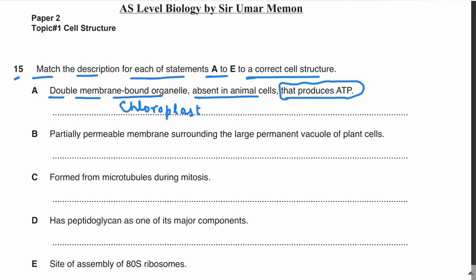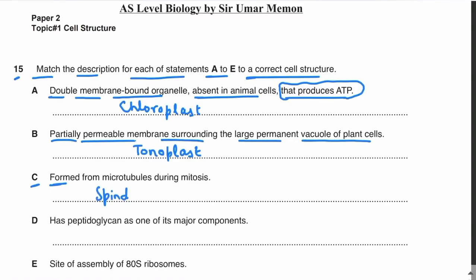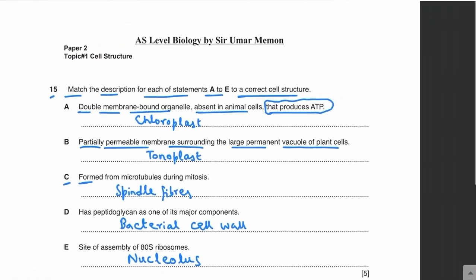Part B: partially permeable membrane surrounding the large permanent vacuole of the plant cell. This is known as the tonoplast. Part C: formed from microtubules during mitosis — these are spindle fibers. Part D: has peptidoglycan as one of its major components — this is the bacterial cell wall, which is made up of peptidoglycan. The last one: site of assembly of 80S ribosomes — ribosomes are assembled in the nucleolus in eukaryotes.